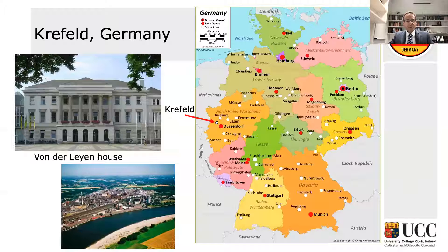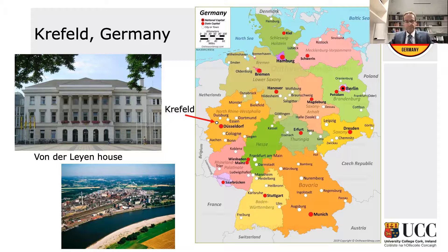One of the families very heavily involved in the silk industry was the von der Leyen family — most of you probably know Ursula von der Leyen, the President of the European Commission, and her family's in-laws are from Krefeld, so it's a very prominent family. Krefeld is also known for a big chemical manufacturing industry. After primary school, I went to the Gymnasium Fraptianum, which is a STEM-oriented grammar school.